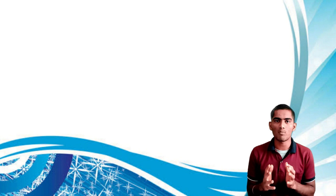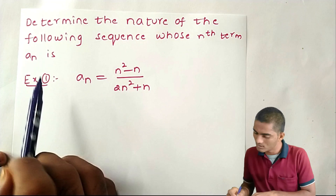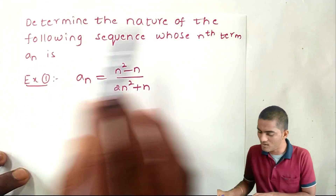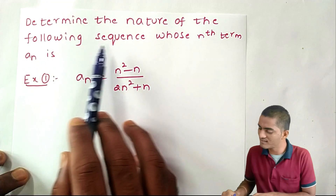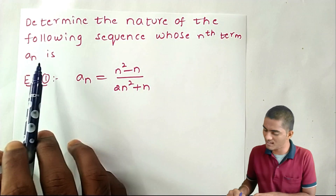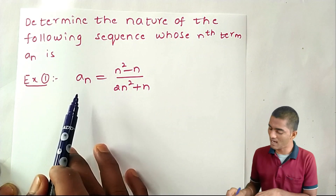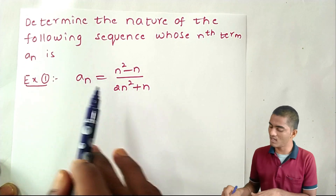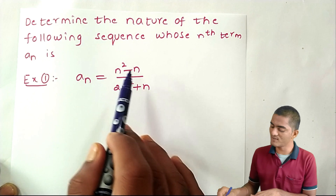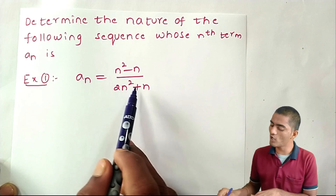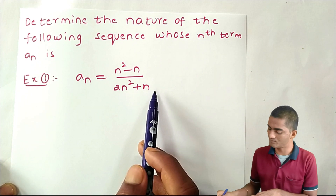Let's see some problems. Determine the nature of the following sequence whose nth term a_n is. Here we have the nth term of the sequence: a_n equal to (n² - n) / (2n² + n).